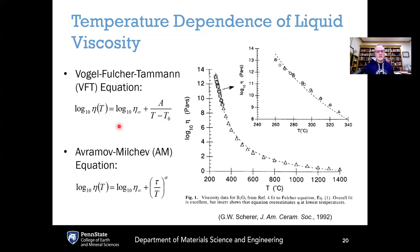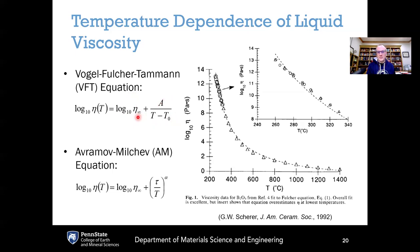The VFT equation rewritten in modern form is: log10(η) = log10(η∞) + A / (T - T0), where the constant out front is the limit of viscosity as temperature goes to infinity. If T goes to infinity, the second term goes to zero and you're left with log10(η∞), the infinite temperature limit of viscosity. There are three unknowns — log10(η∞), A, and T0 — usually treated as fitting parameters.